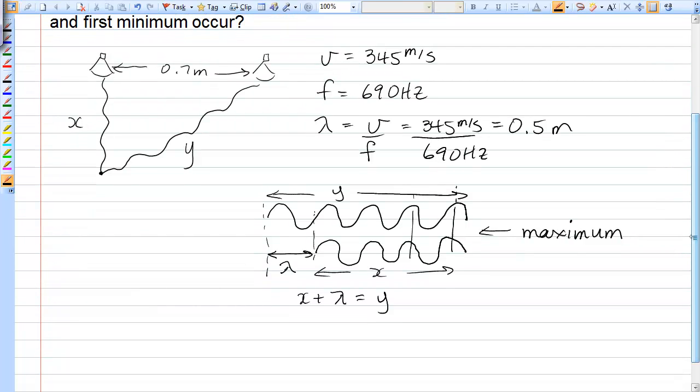So in order for these waves to meet at point P and constructively interfere, in other words, be right on top of each other, it must be that Y is equal to X plus lambda.